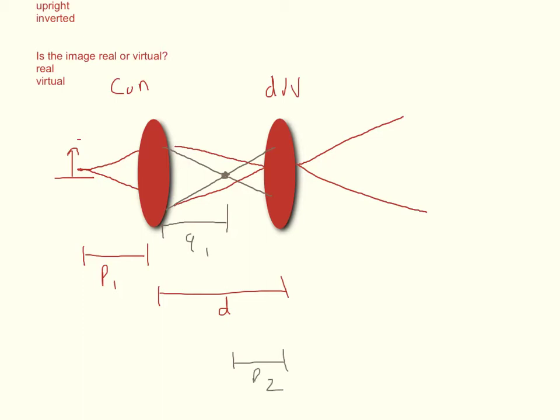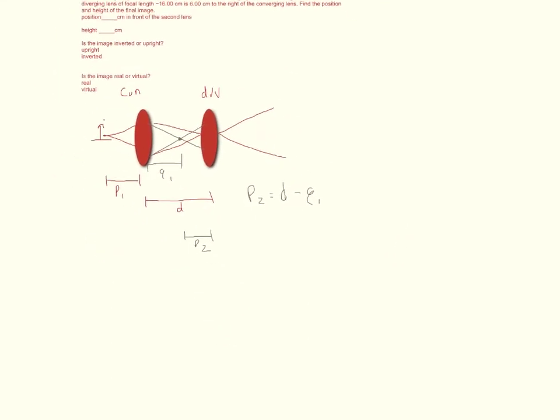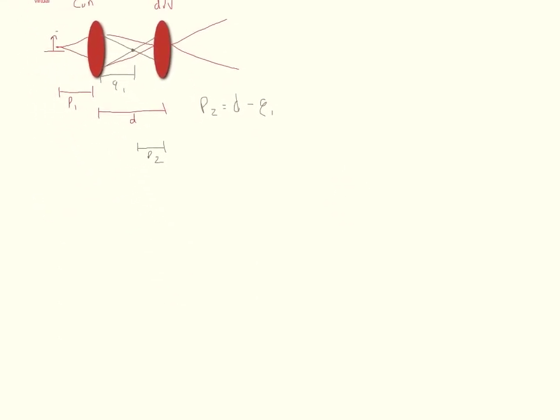Let's define P2 and Q1 in terms of each other. We can say that P2 is equal to D minus Q1. In other words, if I travel the length D and I subtract off Q1, this would be my length P2. Now I have a few variables defined.